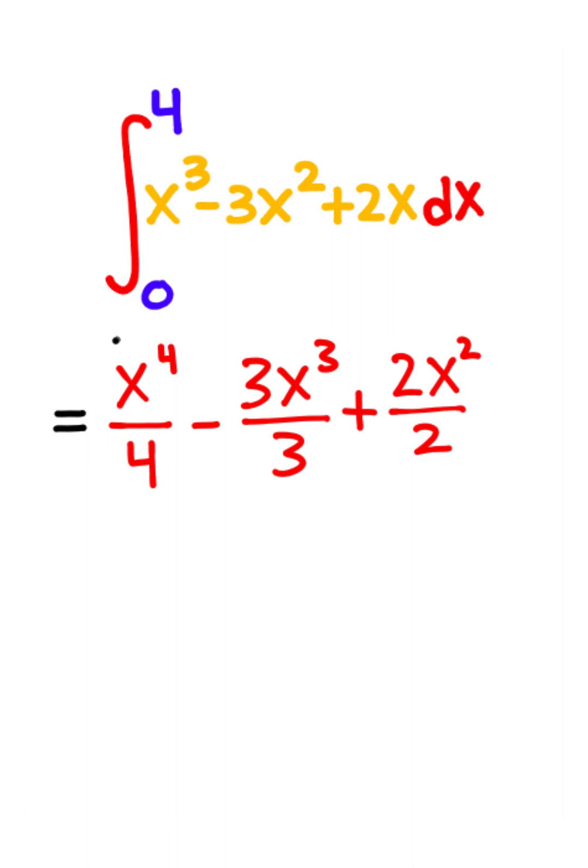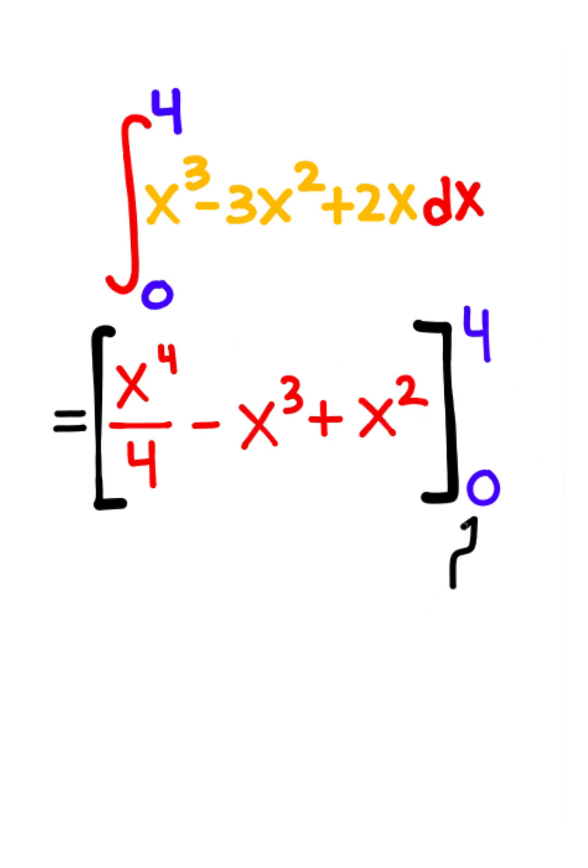So this is what we get after we integrate and I'm going to bound this result from 0 to 4. Looking at this result, I notice that the 3s cancel and the 2s cancel as well and I also notice that our lower bound is 0.